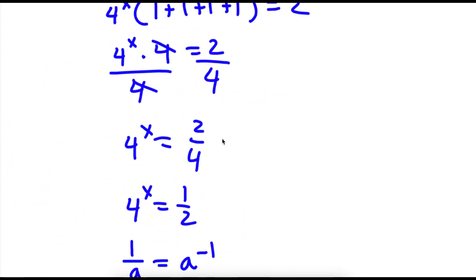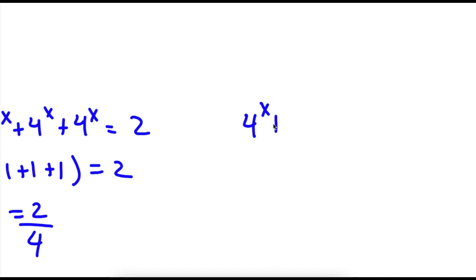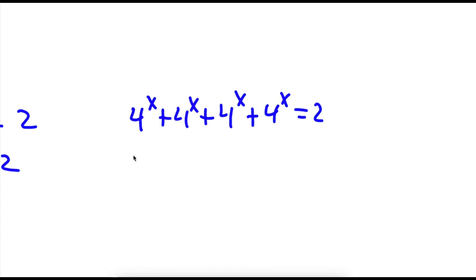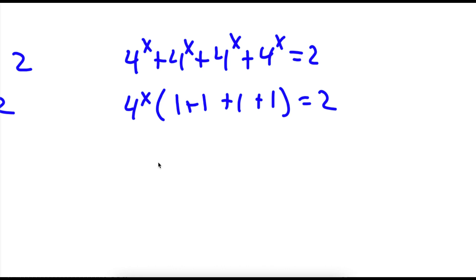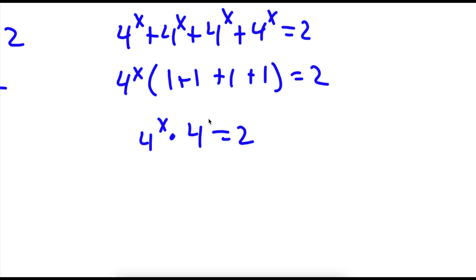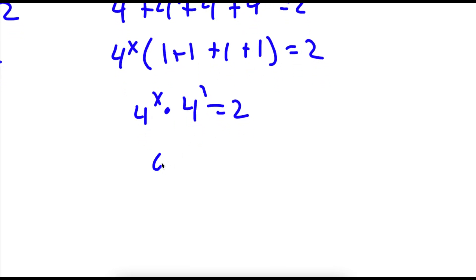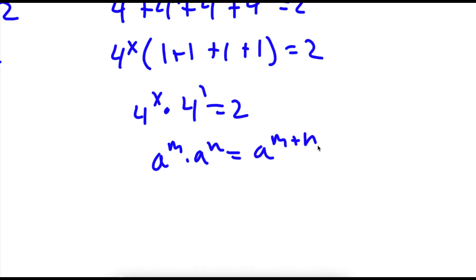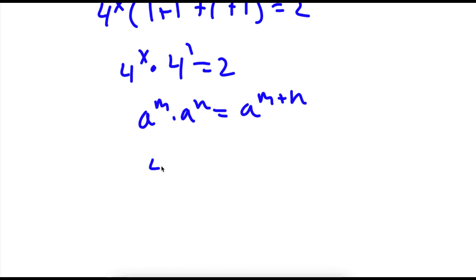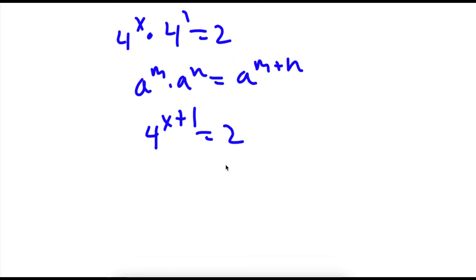Now another method of solving this is — remember we started with 4 to the power of x plus 4 to the power of x plus 4 to the power of x plus 4 to the power of x is equal to 2. So I'll first factor out 4 to the power of x, so now I have 4 to the power of x times 4 is equal to 2. Now instead of dividing both sides by 4, 4 is the same thing as 4 to the power of 1. And if I have a to the power of m times a to the power of n, this equals a to the power of m plus n. So 4 to the power of x times 4 to the power of 1 equals 4 to the power of x plus 1 is equal to 2.